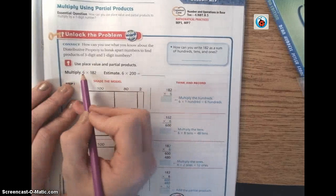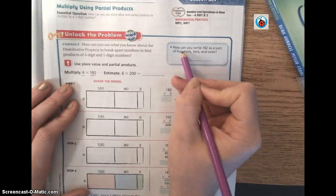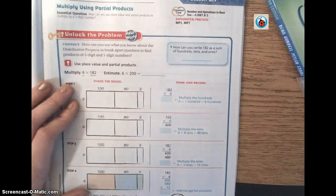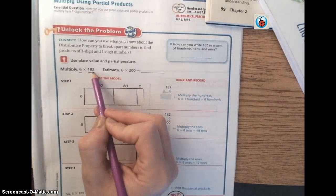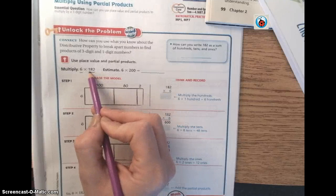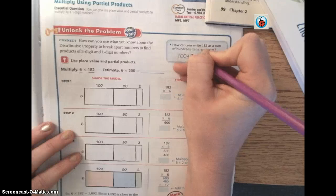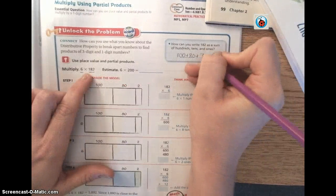Here we have 6 times 182. How can you write 182 as a sum of hundreds, tens, and ones? If you think of the number 182 in expanded form, you would have 100 plus 80, because there's 8 tens, plus 2 ones.